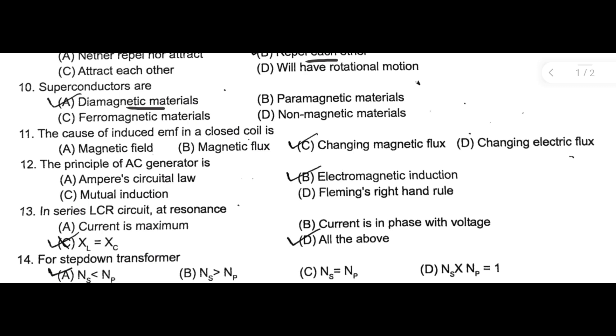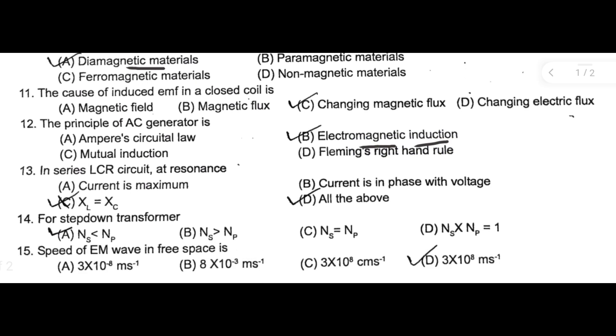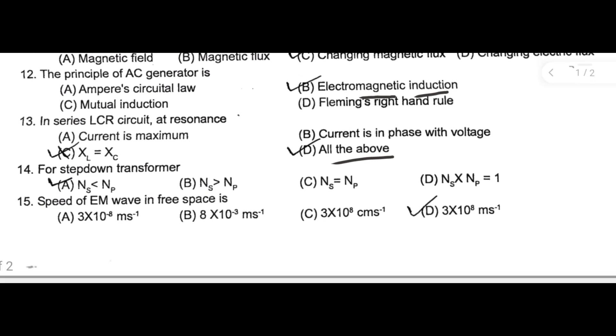Next one: the principle of AC generator is based on electromagnetic induction. Next one: in series LCR circuit at resonance, all the above are right answer. Next one: for step-down transformer, NS is less than NP, option A. Next one: speed of EM wave in free space is 3×10⁸ meter per second is the right answer.